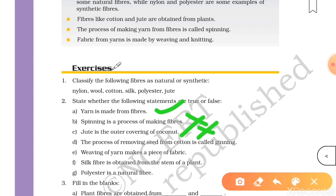Next, the process of removing seeds from cotton is called ginning. This is true. Now this E part, we will come to it later.